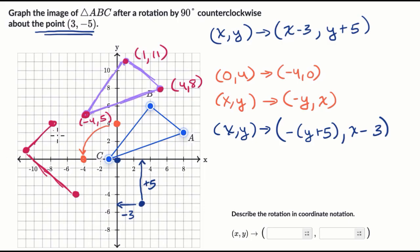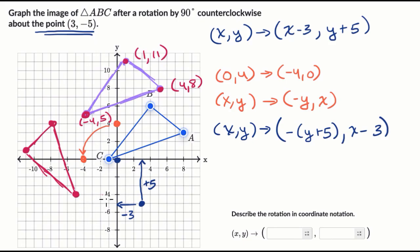Now we want to shift things back. We have one more translation — we essentially want to undo that first translation by adding three to X and subtracting five from Y, shifting the origin back to three comma negative five. So we shift everything to the right by three and down five for each of the three vertices. That's where our triangle ends up on the drawing.